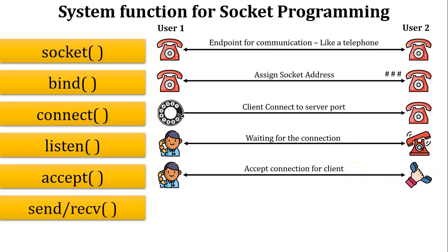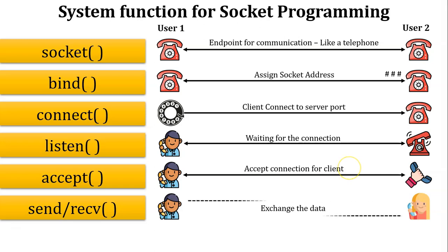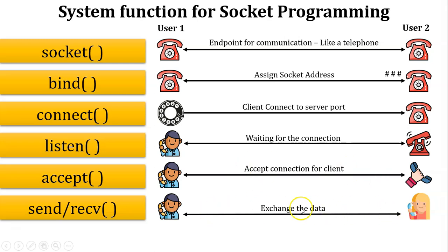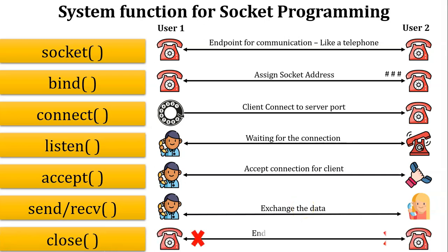The send and receive functions represent user 1 and user 2 communicating and exchanging information after the call is accepted — meaning exchanging data between client and server. The close function is like user 1 and user 2 hanging up the receiver after exchanging information, signifying the end of communication and closing the connection.